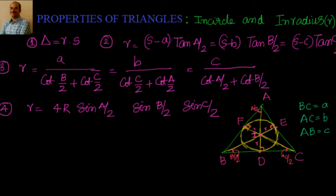The incircle is obtained by the point of concurrency of the internal angular bisectors — because this angle is an internal angle. We will discuss external angles when we go to the excircle in coming videos. The incircle is inscribed in the triangle, and its radius is called the inradius. Remember: the point of concurrency of perpendicular bisectors gives the circumcircle, while the point of concurrency of angular bisectors gives the incircle.